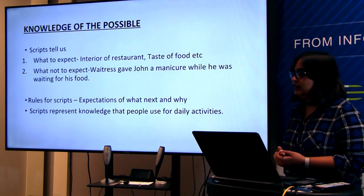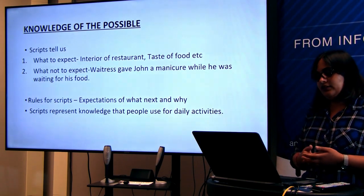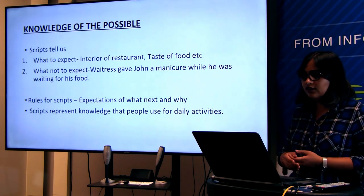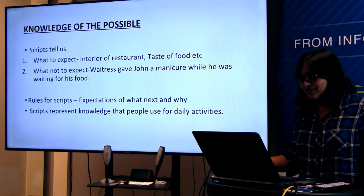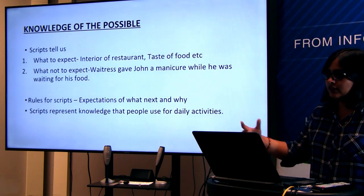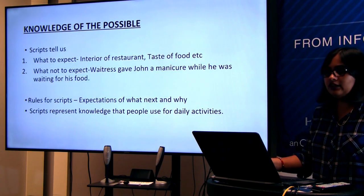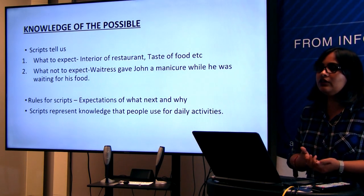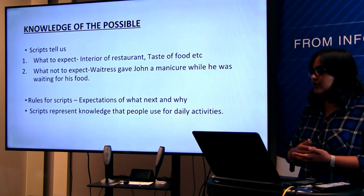Knowledge of what could have happened: the script tells us what to expect, such as the interior of the restaurant and the taste of the food. It also tells us what NOT to expect — like the waitress giving John a manicure while he waited for his food. Those things are defined in the script as the knowledge structure. Scripts include rules for what happens next, why it happens, and what kinds of situations we will face.